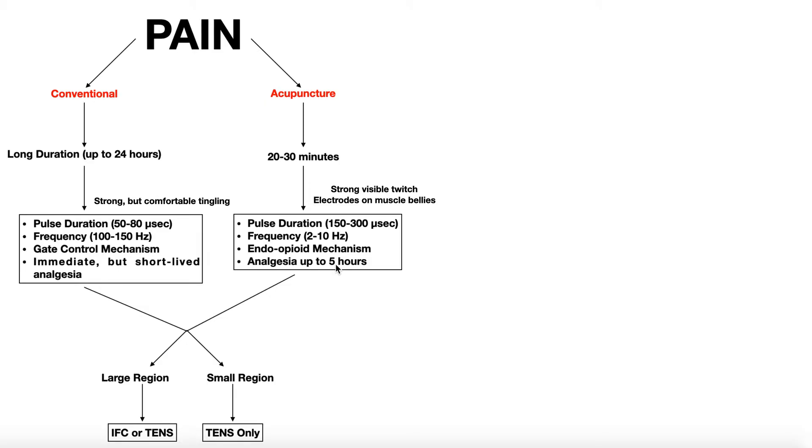If a person were in a job situation, or really any situation, where they couldn't have the machine on them but they needed pain relief while they were doing that job, you could set them up with an acupuncture setting for 30 minutes, and they would have pain relief potentially hours after that treatment was done. Do TENS or IFC machines just have a button you can push to set it as conventional or acupuncture setting? No. Instead, you're going to have to program the pulse duration and the frequency.